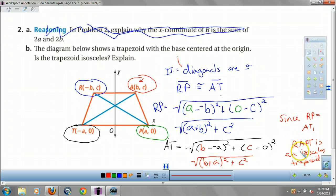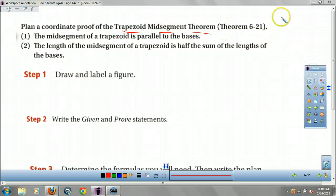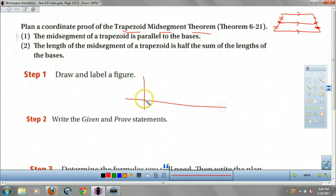One more slide. Okay? Plan a coordinate proof of the trapezoid mid-segment theorem. You guys remember that? It says if you have an isosceles trapezoid, you connect the mid-segments, then it cuts this in half. Oops. And it's parallel to the bases. Okay? So we need to prove two things. First thing we have to do is draw and label a picture.